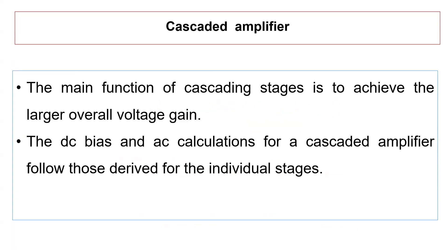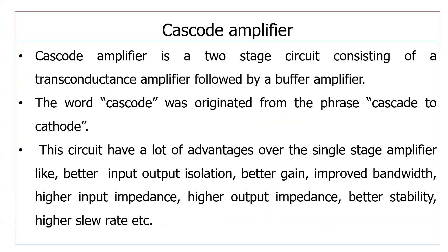The main function of the cascading amplifier is to achieve a larger overall voltage gain. The DC bias and AC bias calculations for a cascaded amplifier follow the same calculations as the multiplication of the first and second stage gains.